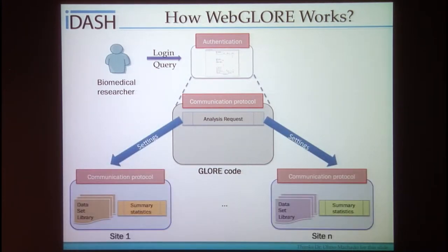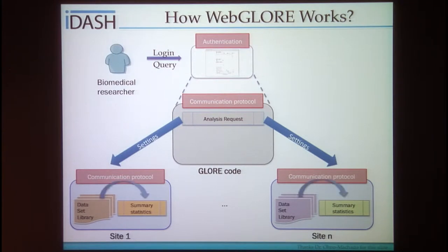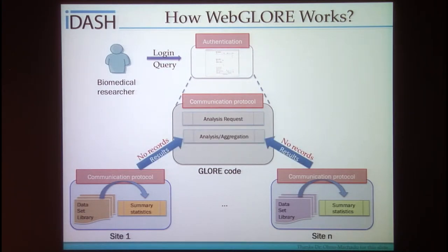At each local institution, sites 1 through N, they use the previously calculated parameter vector to calculate a summary statistical table. This partial statistic table is sent back to the Glow code. When all parties respond, the Glow centralized module aggregates the result and computes the next iteration of the parameter. This process keeps iterating until the model converges.